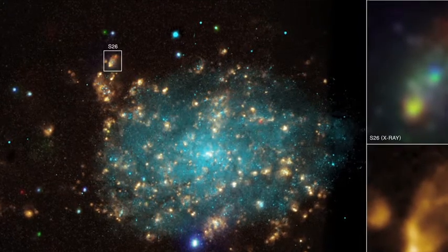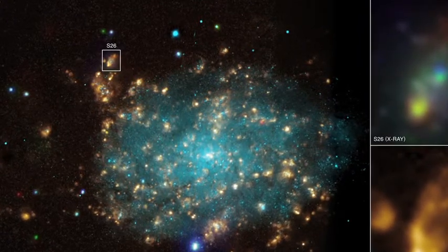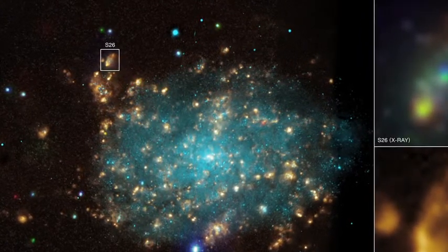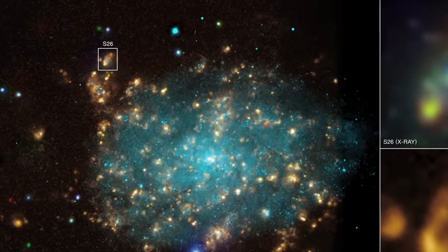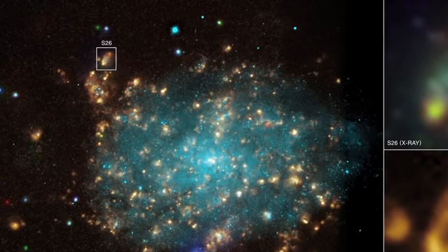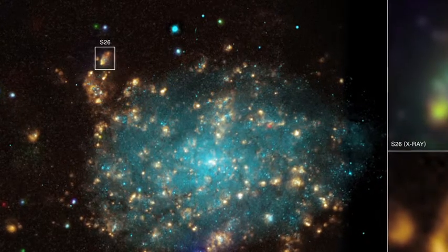A microquasar is a system where a stellar-mass black hole is being fed by a companion star. A stellar-mass black hole is created from the collapse of a star at least eight times the size of our Sun.